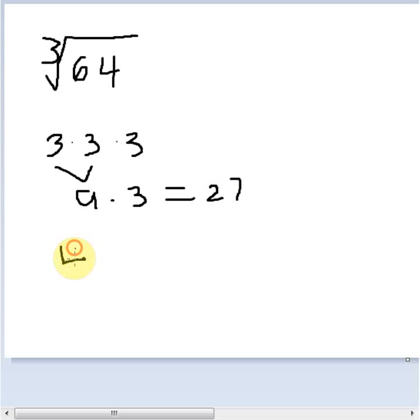If I take 4 and multiply 4 to itself 3 times, 4 times 4 gives me 16. 16 times 4 gives me 64.